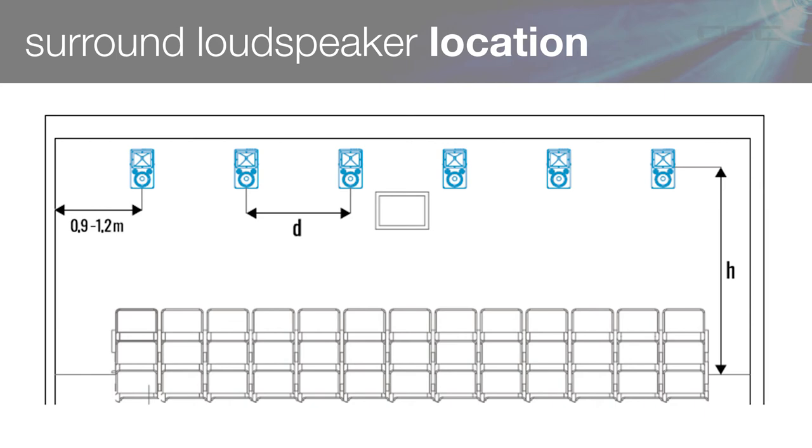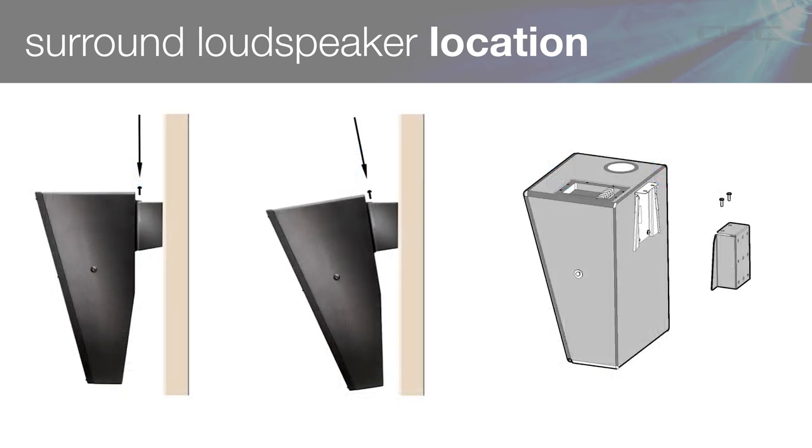Due to the slope of the floor, rear wall surrounds usually need to be aimed downward more steeply than sidewall surrounds. QSC makes a special wall bracket that adds another eight degrees of tilt just for this purpose.